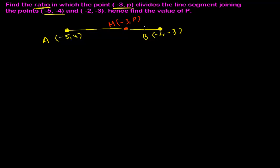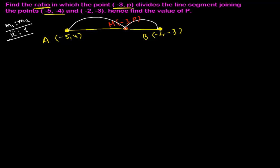Point M is dividing AB into two sections: section AM and section MB. We need to find how much part is on each side — what ratio we have in AM and what we have in MB. We need to assume some ratio. You can use m1:m2 or k:1 — whichever you find easier. Let's go with m1:m2 this time.